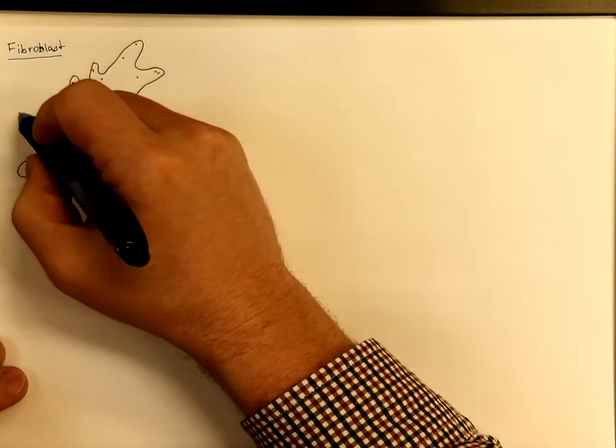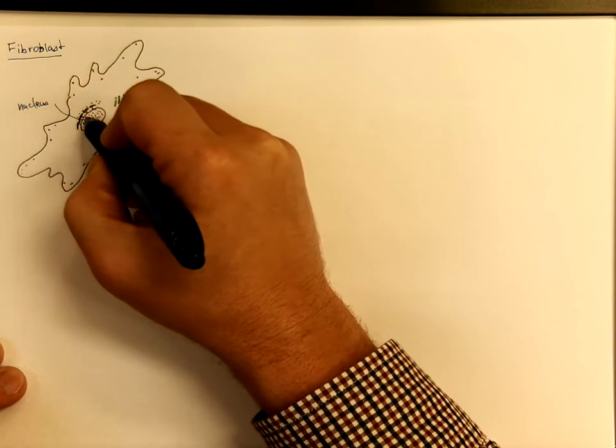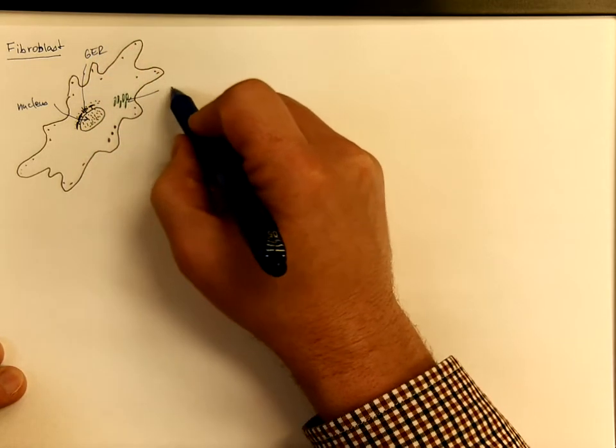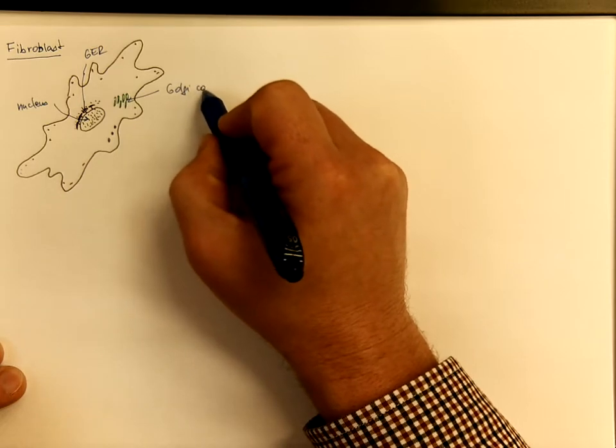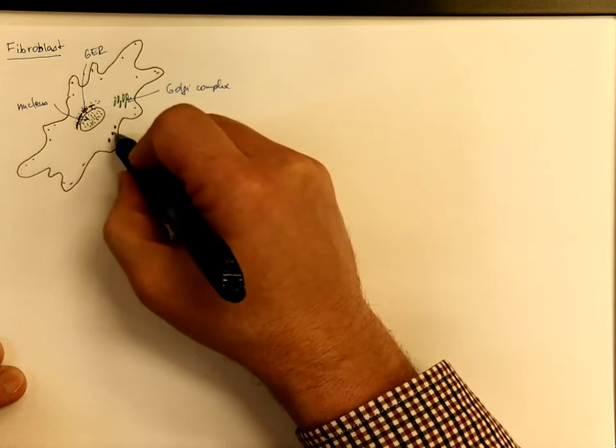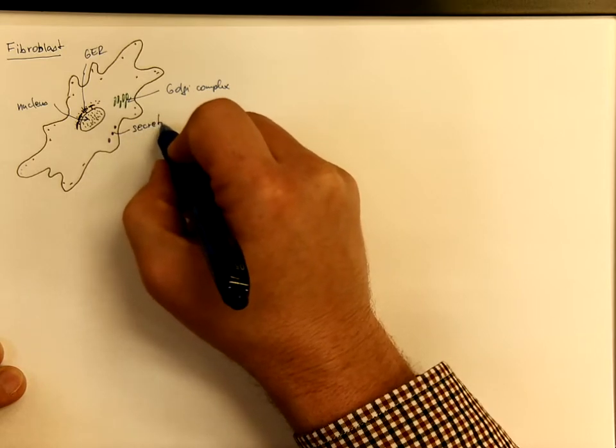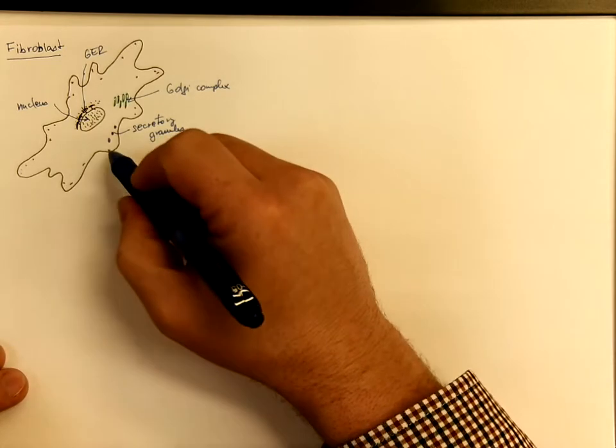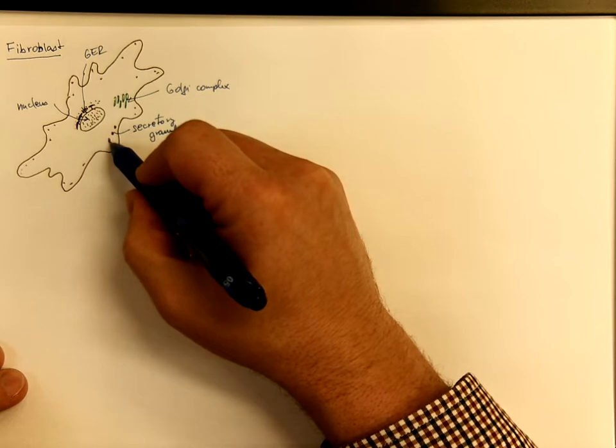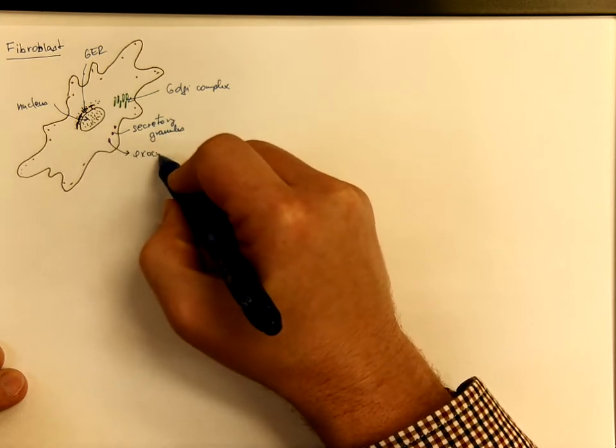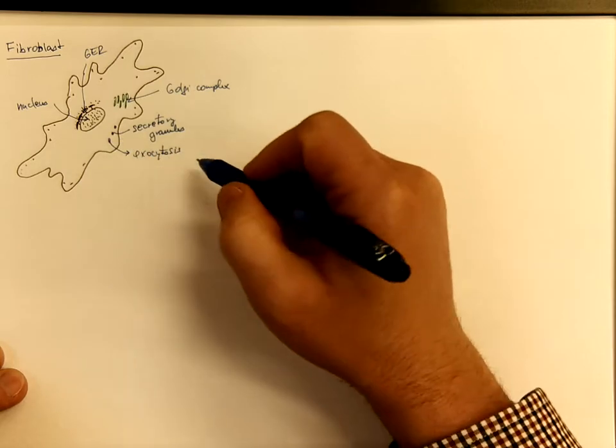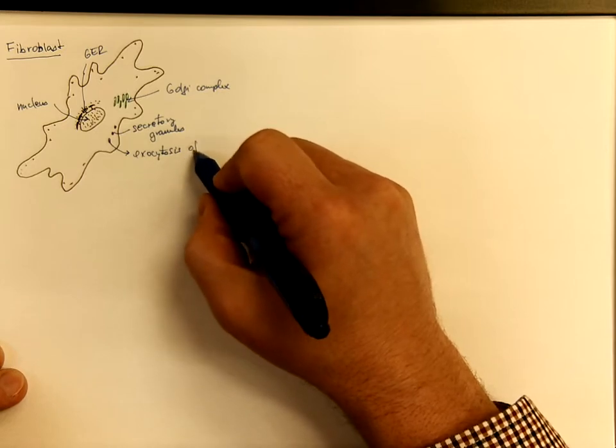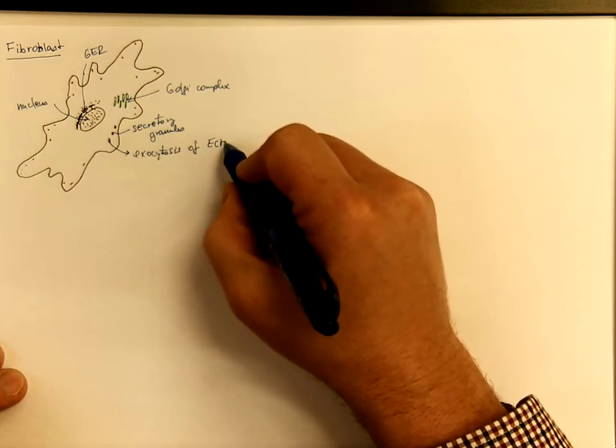So we have the nucleus, the granular endoplasmic reticulum, the Golgi complex and the secretory granules. These secretory granules undergo exocytosis and the fibroblasts contribute to production of extracellular matrix. So it is the exocytosis of extracellular matrix precursors.